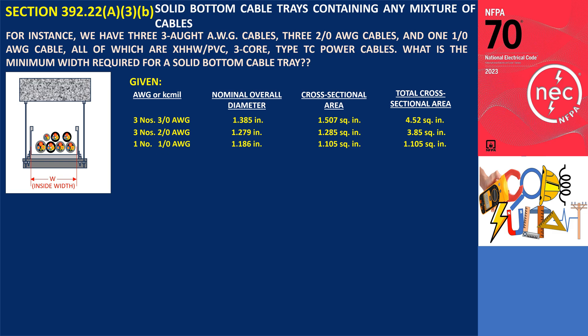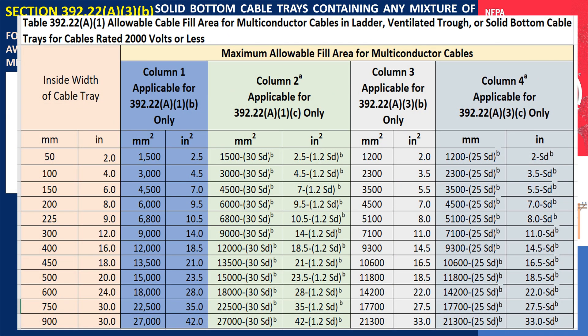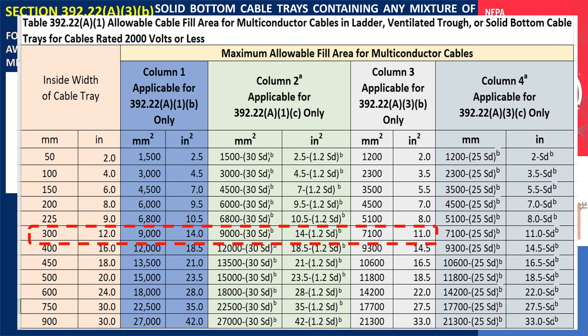The procedure for calculating the cross-sectional area was shown in my previous video. Adding these together, the total cross-sectional area of all the cables is 9.48 square inches. Since a 225-millimeter (9-inch) solid-bottom cable tray has a maximum capacity of 8 square inches, the minimum inside width required for the solid-bottom cable tray, as specified in Table 392.22(A)(1), Column 3, is 300 millimeters or 12 inches.